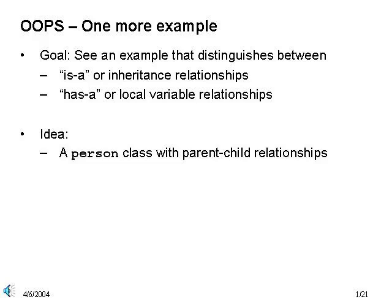We want to do one more example to help solidify our understanding of our Scheme object-oriented programming system. Our goal in this example is to show the difference between is-a and has-a relationships. Our previous examples mostly explored how to define and use classes with inherited methods. In this example, we want to show that classes and instances can build relationships between distinct instances. Our example will be to implement some classes that establish family relationships between instances.